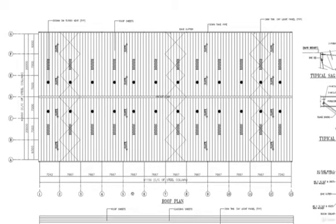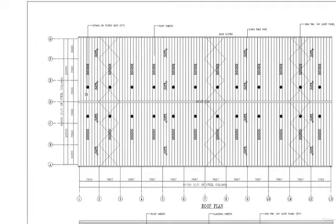The total length of the PB shed is approximately 91.15m (91,150mm). Along this, as we drew in the previous lecture, the column is going up to the first 20m and then again 20m.